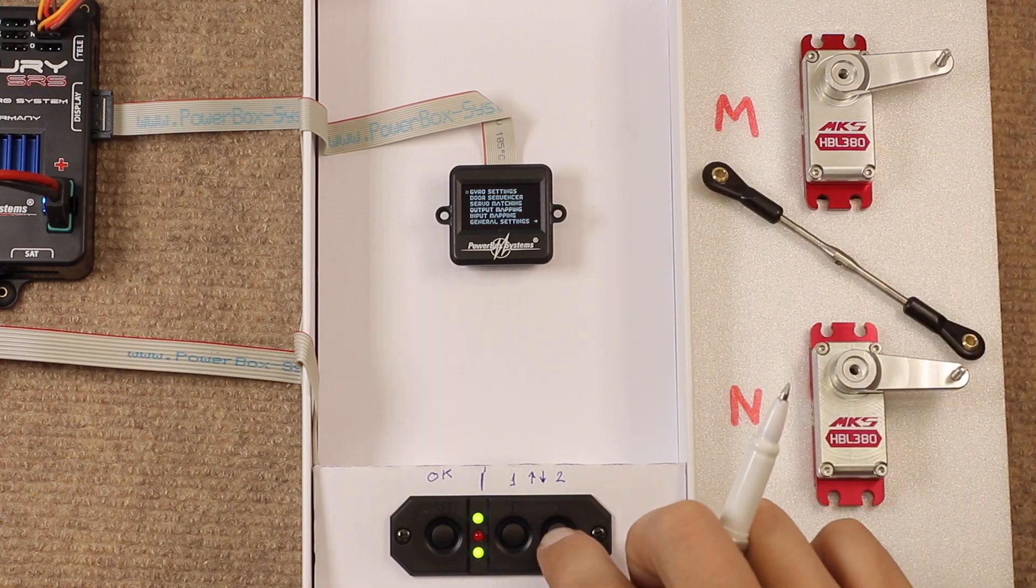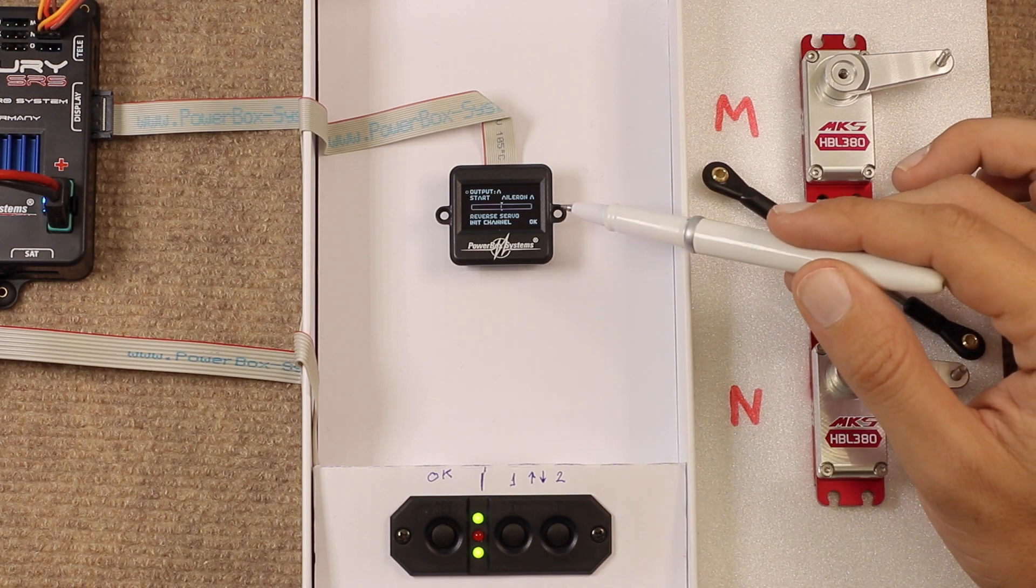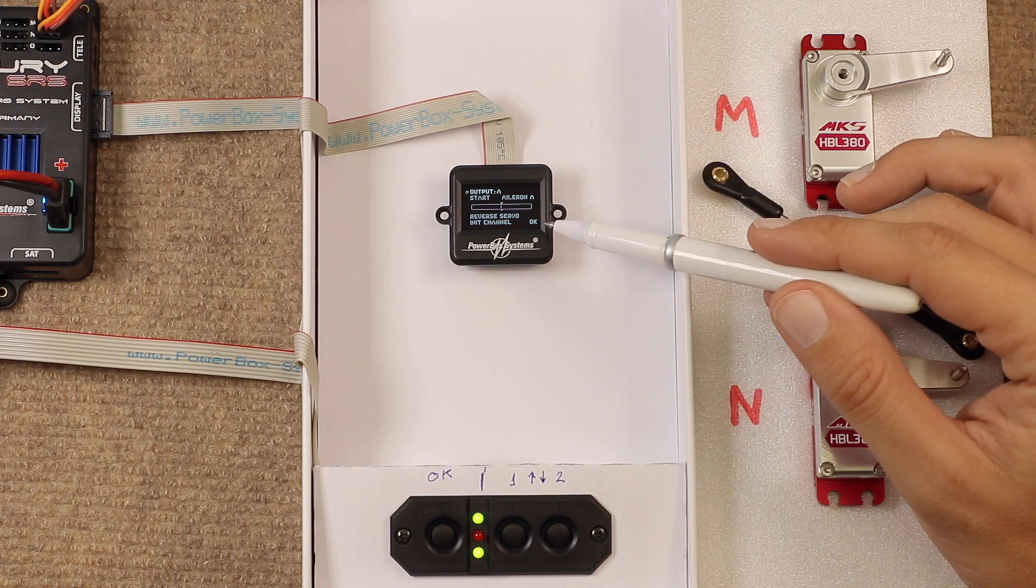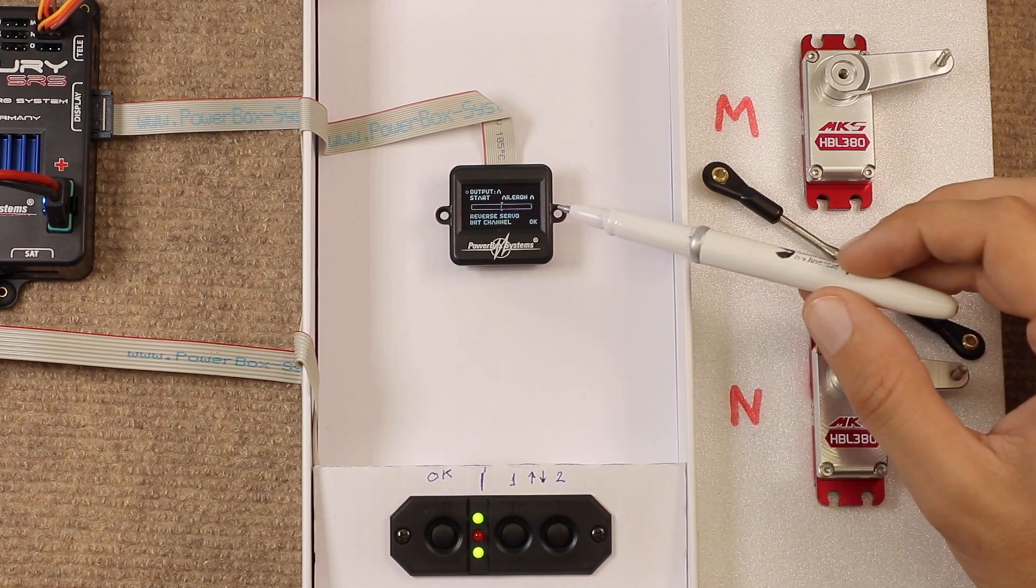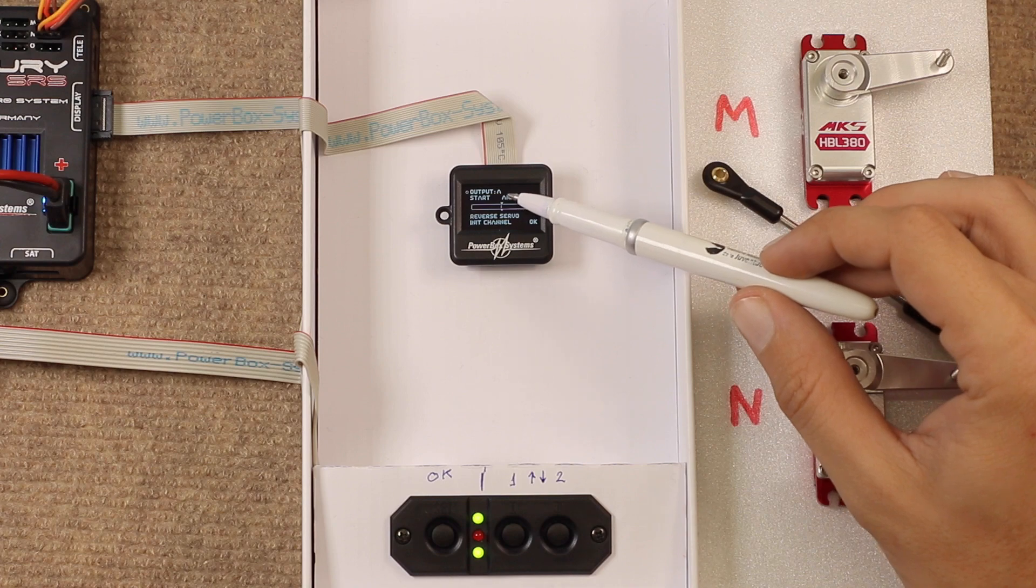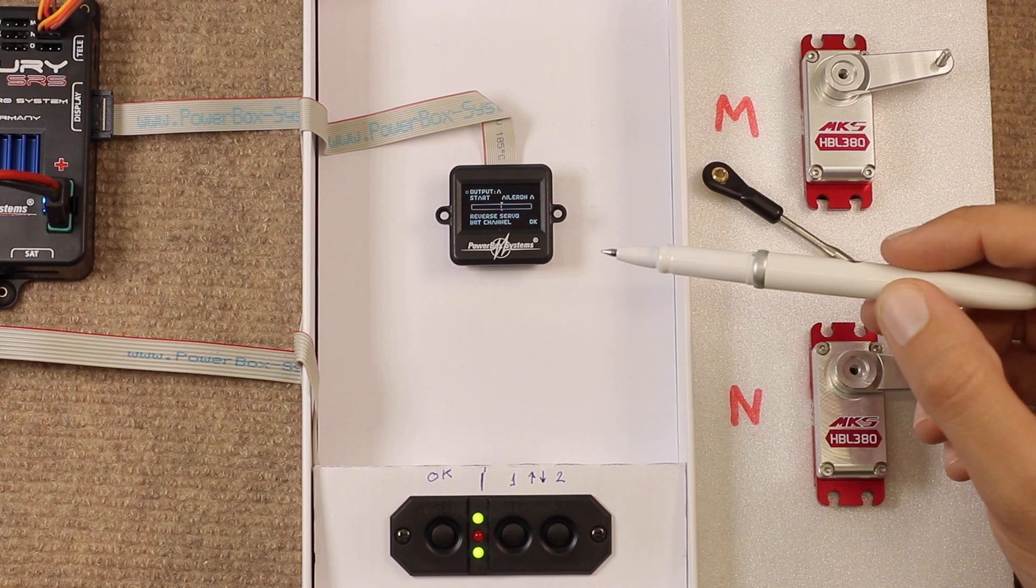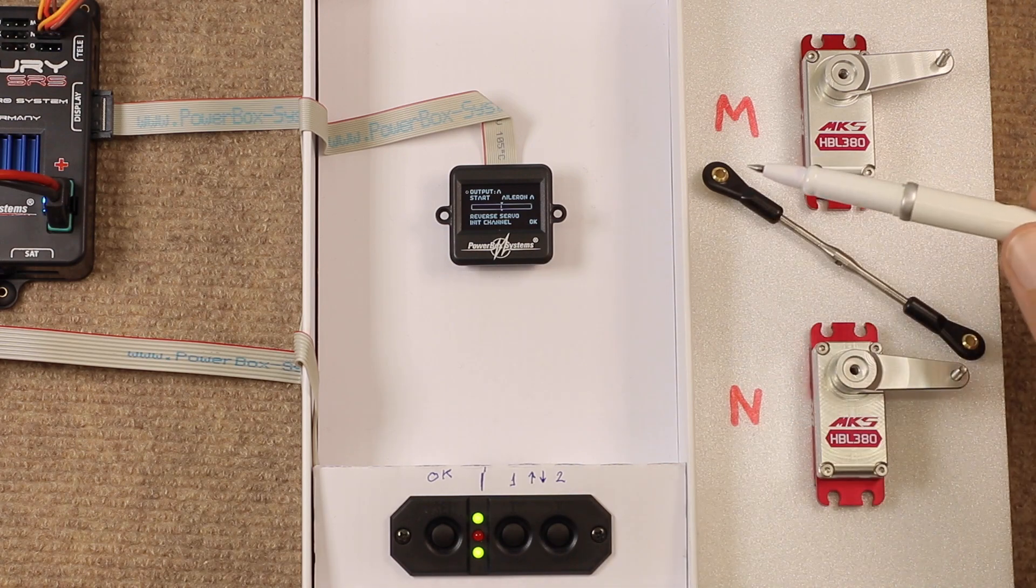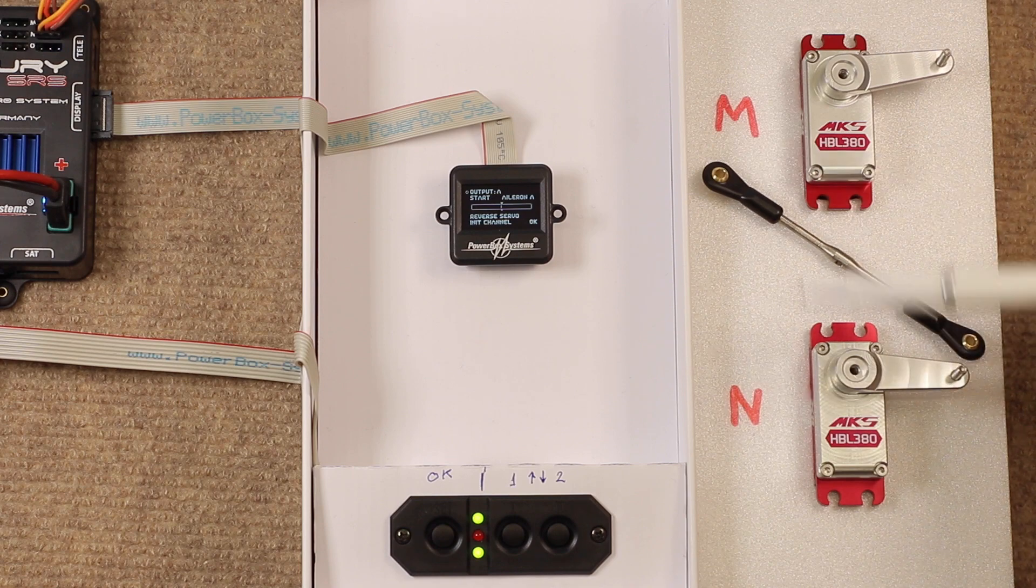So, we go into the third menu, the servo matching, and we can see a screen. This particular screen, there's going to be one screen per output on the power box. In this case, as you can see, the first one is output A, which we can change up until however many channels our Mercury has. In this case, as we've said, we have channels M and N, outputs M and N.